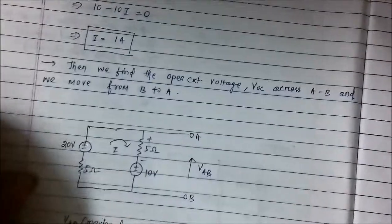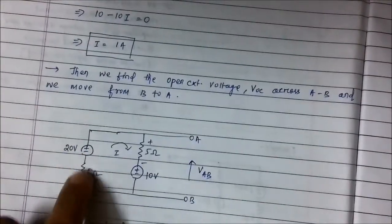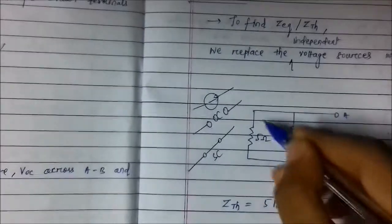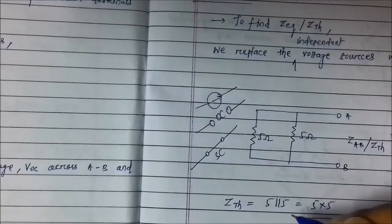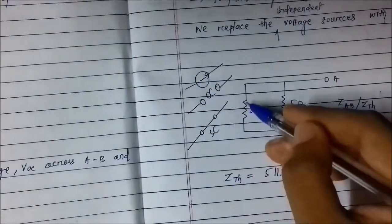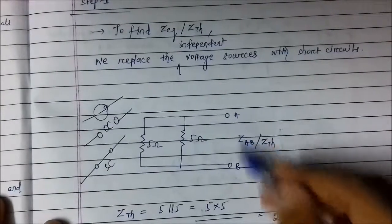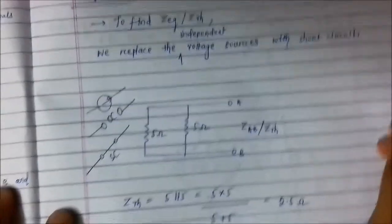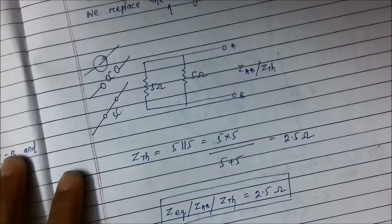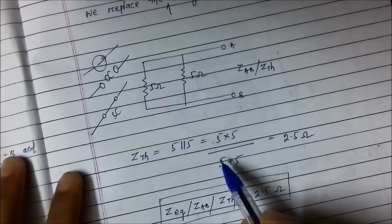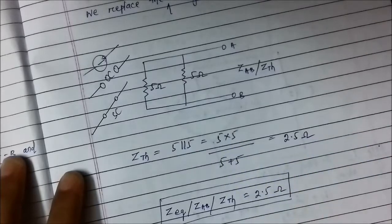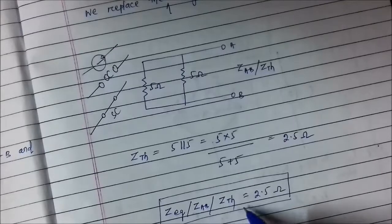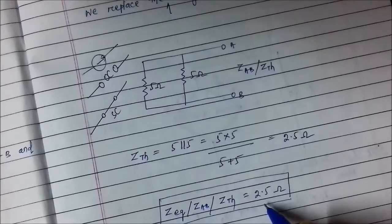Here, there were two voltage sources, so we short-circuit them. If there had been a current source, we would have open-circuited it. Then find the equivalent resistance across the two points A and B. These two 5-ohm resistances are now connected in parallel, so the equivalent resistance is 5 parallel 5 = (5 × 5) / (5 + 5) = 2.5 ohm. Therefore, Z_Thevenin = R_TH = 2.5 ohm.